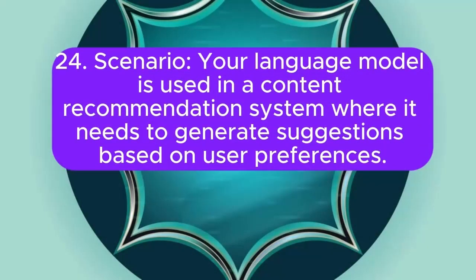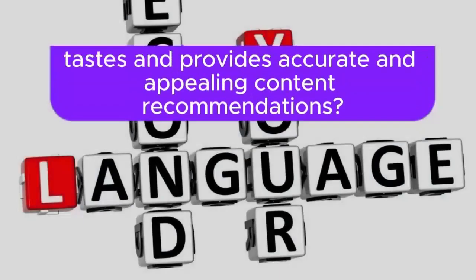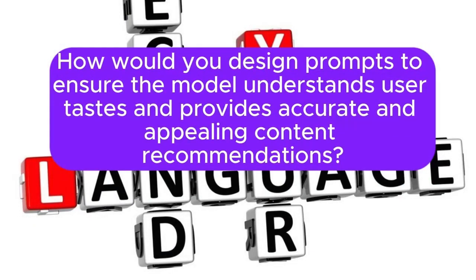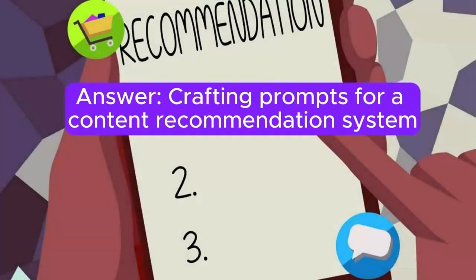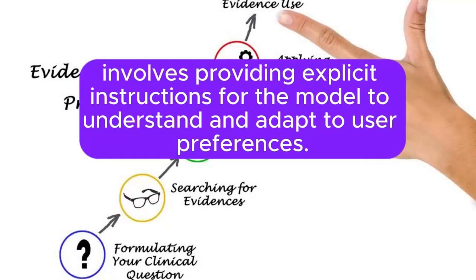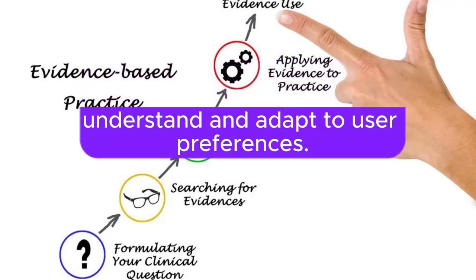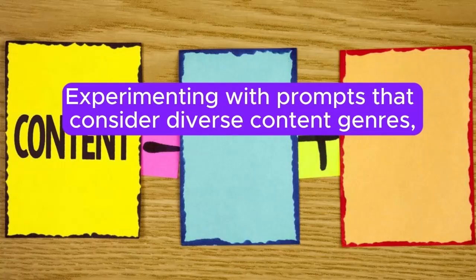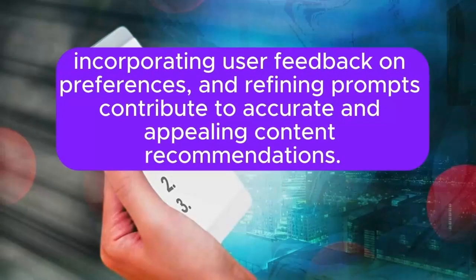Scenario 24: Your language model is used in a content recommendation system, where it needs to generate suggestions based on user preferences. How would you design prompts to ensure the model understands user tastes and provides accurate and appealing content recommendations? Answer: Crafting prompts for a content recommendation system involves providing explicit instructions for the model to understand and adapt to user preferences. Experimenting with prompts that consider diverse content genres, incorporating user feedback on preferences, and refining prompts contribute to accurate and appealing content recommendations.